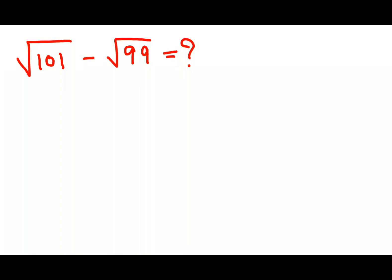Welcome everyone. Today we are going to calculate how to find square root of imperfect squares, and that too a subtraction. So basically here if you see, you are subtracting root of 101 minus root of 99.